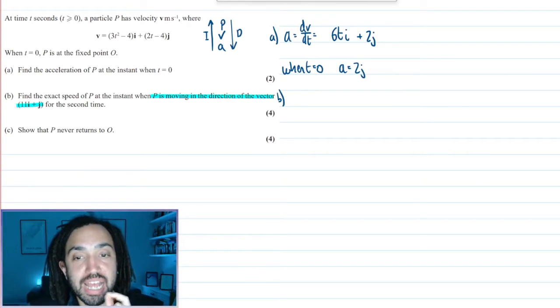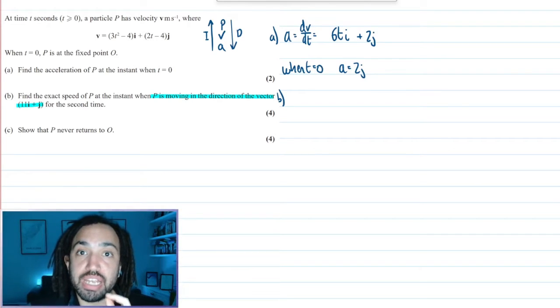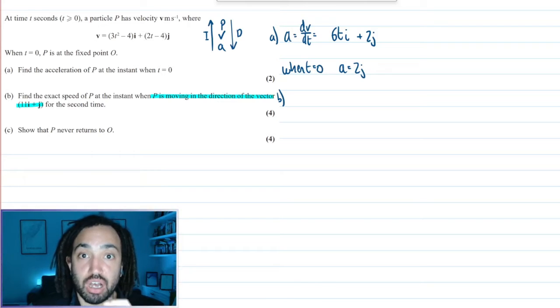So when an object is moving in a particular direction, then its j and i component ratio is the same as the direction vector i and j ratio.